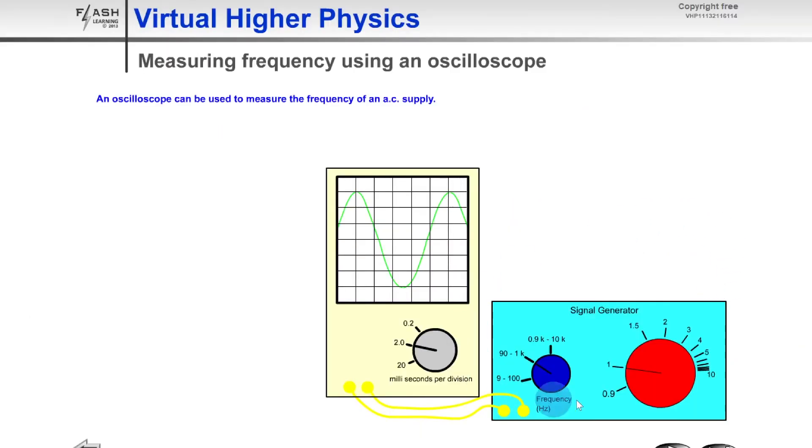Just to show you another example, let's say I've got a signal generator connected to an oscilloscope screen via some wires. To find the frequency of the AC supply, I would count how many boxes horizontally make up one complete wave. Going from the crest here to the crest over here, that's a distance of 1, 2, 3, 4, 5 divisions.